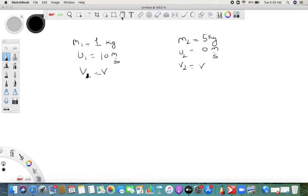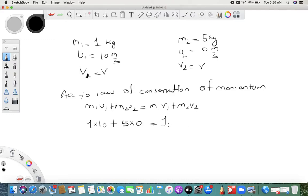We have to use the law of conservation of momentum: m1u1 plus m2u2 is equal to m1v1 plus m2v2. So it is 1 into 10 plus 5 into 0 is equal to 1 into v plus 5 into v. So 10 plus 0 is equal to 6v.